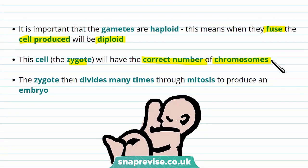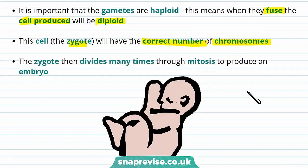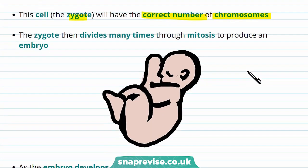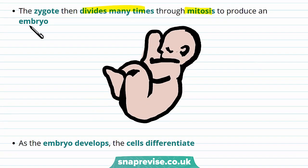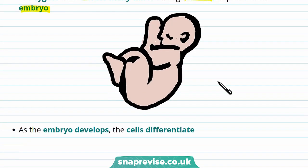So the zygote will have the correct number of chromosomes — in humans this is 46. This makes sense because the haploid gametes, the sperm and the egg cells, both have 23 chromosomes, so joining them together gives 46. After the zygote is formed it then divides many times through mitosis and this produces an embryo. As the embryo develops, the cells differentiate and become specialised to make all the cells of your body, including skin cells and hair cells.